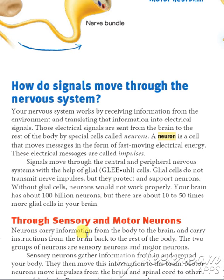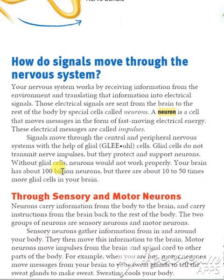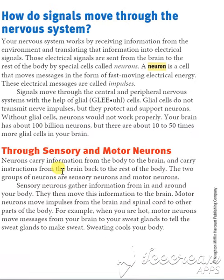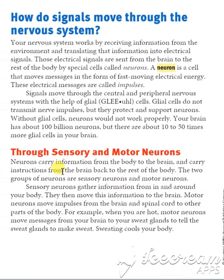These neurons are actually moving the messages in fast-moving electrical energy, and these electrical messages are called impulses. What I'm explaining is more than enough — don't go into much detail because for this chapter, you just have to know some basics.